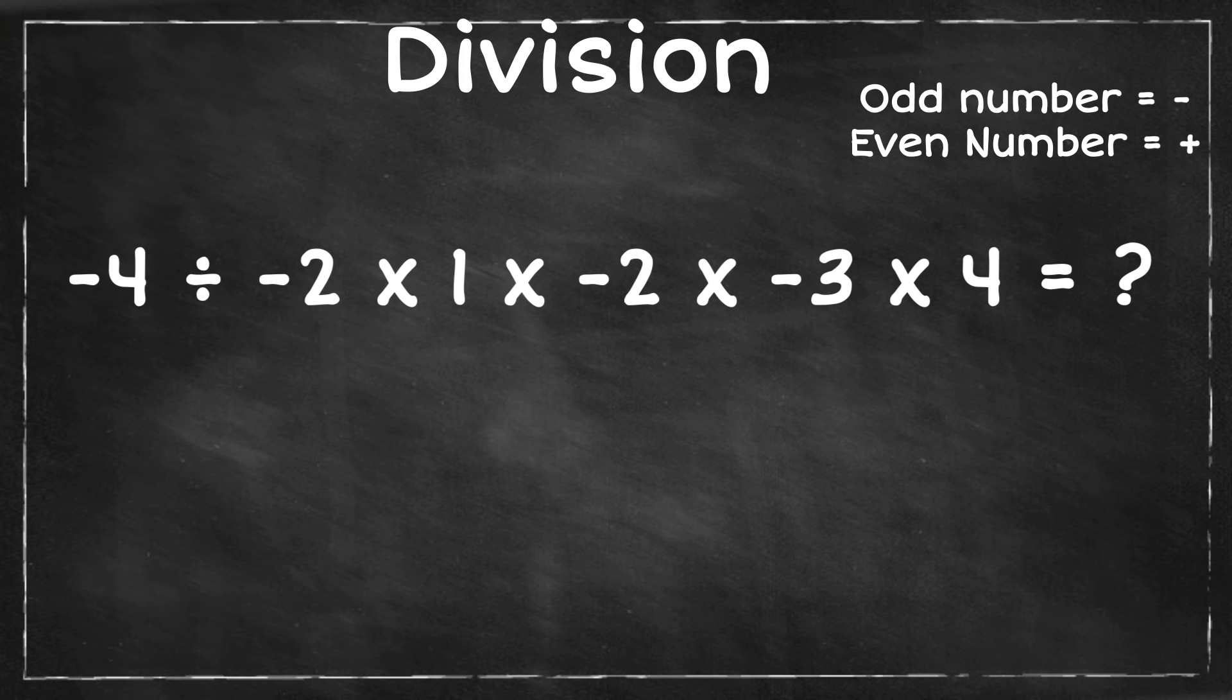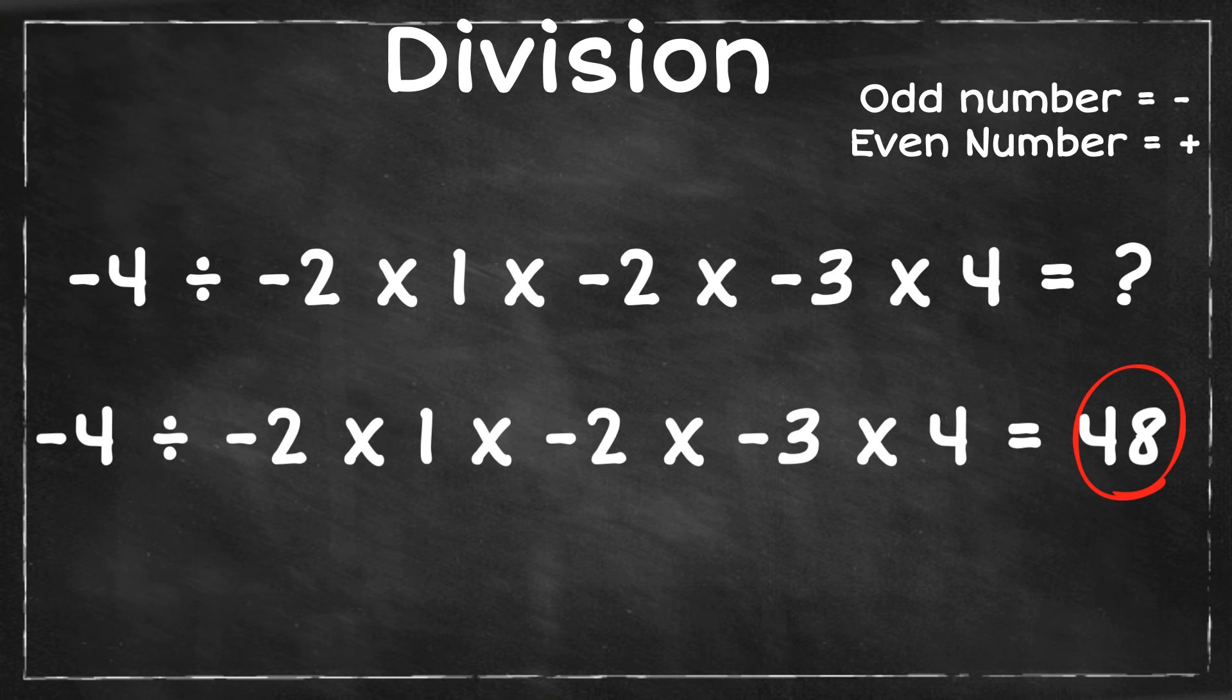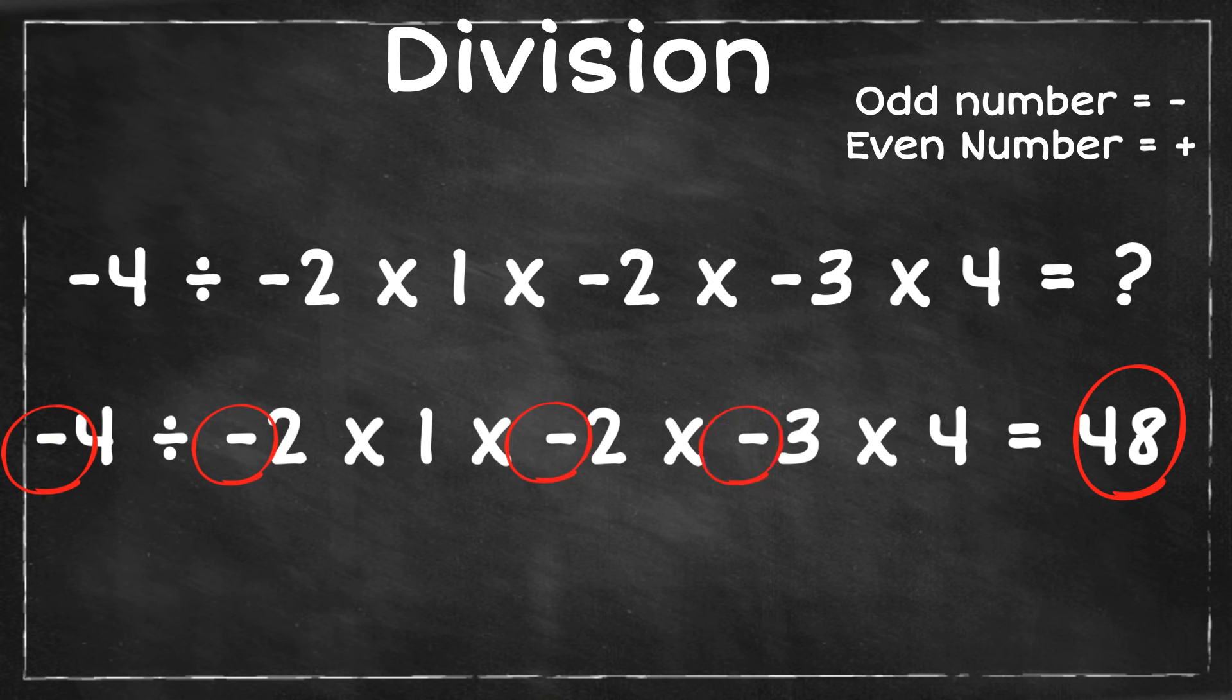Well, when you multiply and divide all those numbers, you get 48. If you count the number of negative numbers, you have 1, 2, 3, 4, so it will be a positive 48.